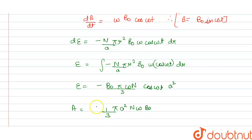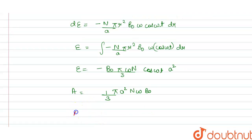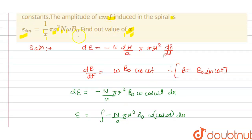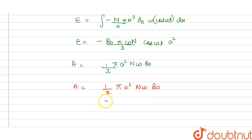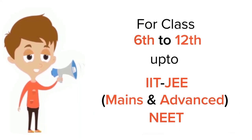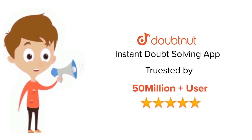From this we get EMF = (1/3)πa²nωB₀. Comparing this with the given expression (1/x)πa²nωB₀, we find that x = 3. Therefore, the value of x is 3.